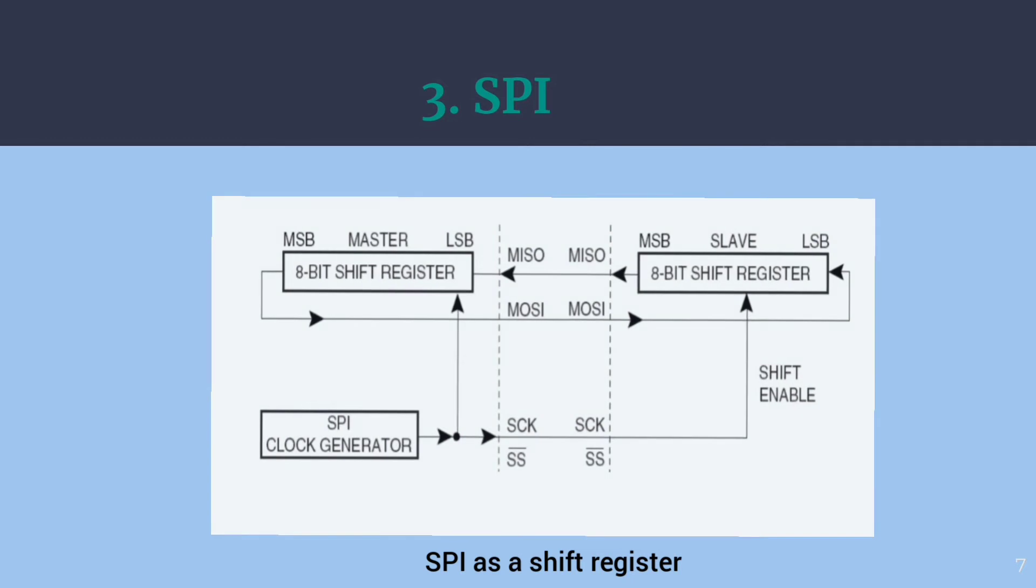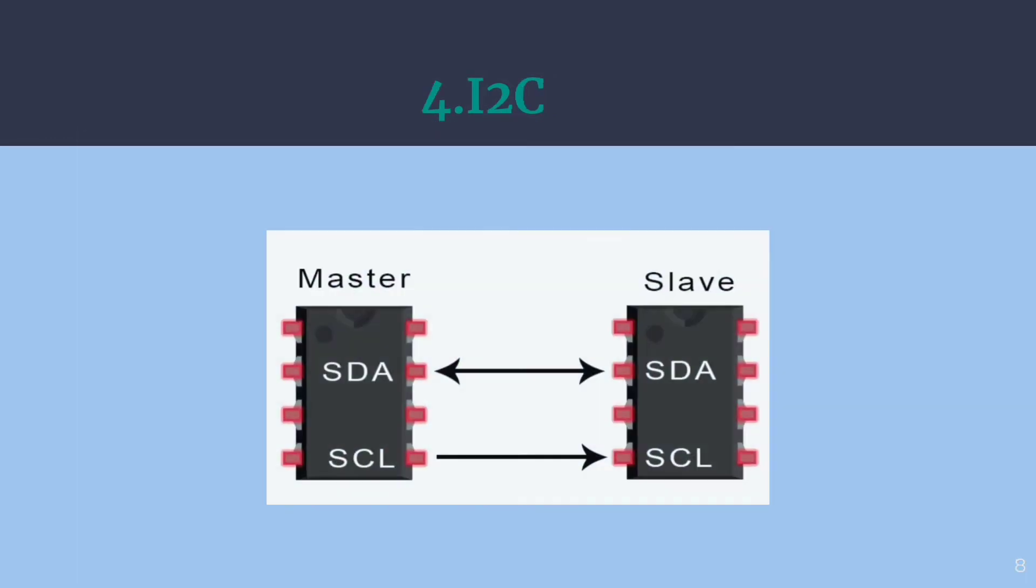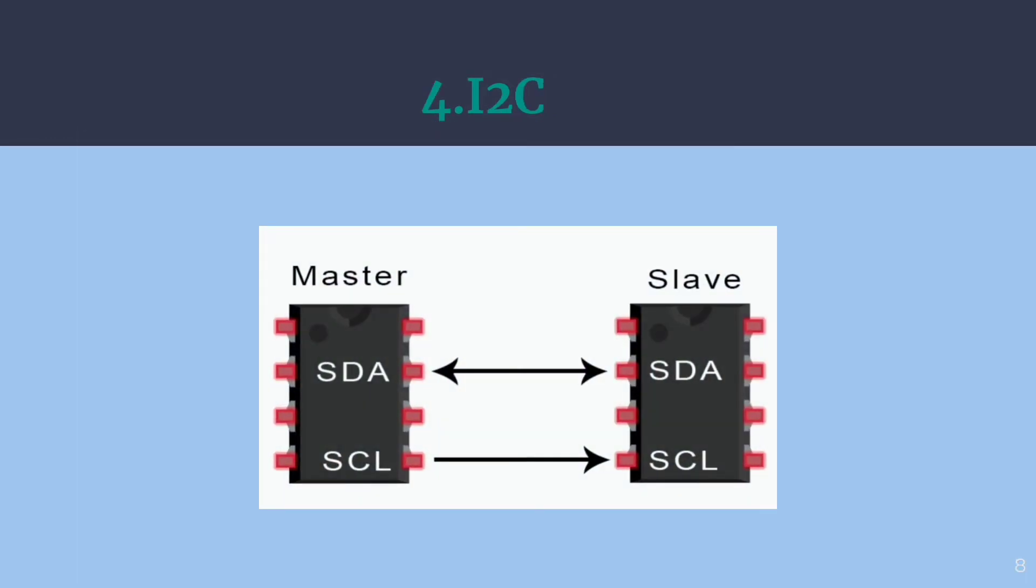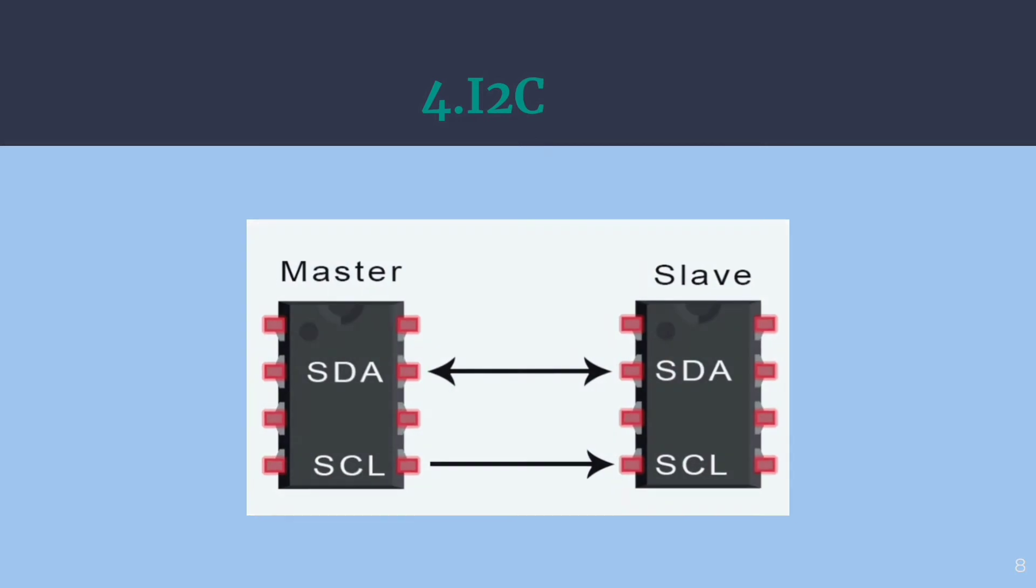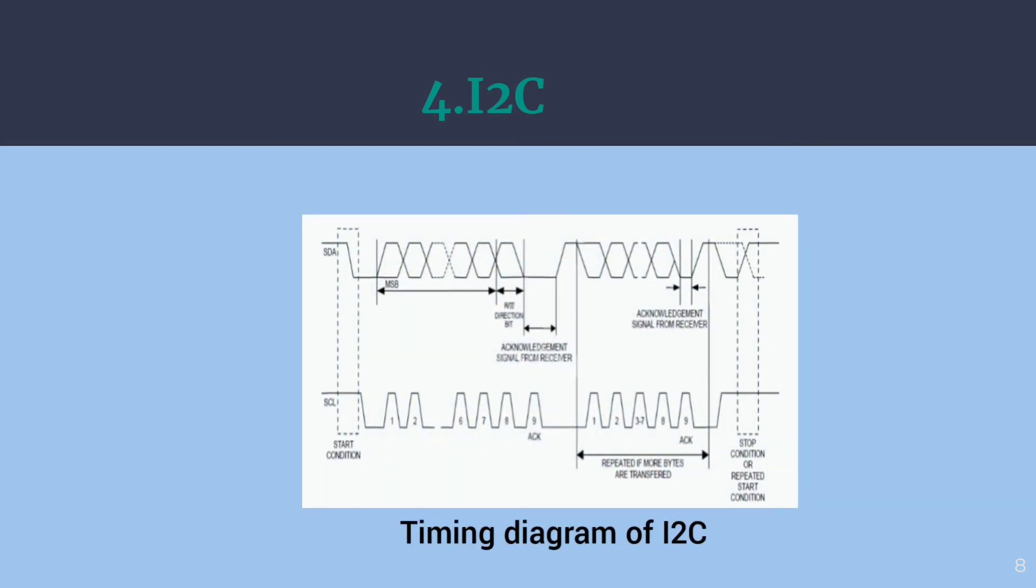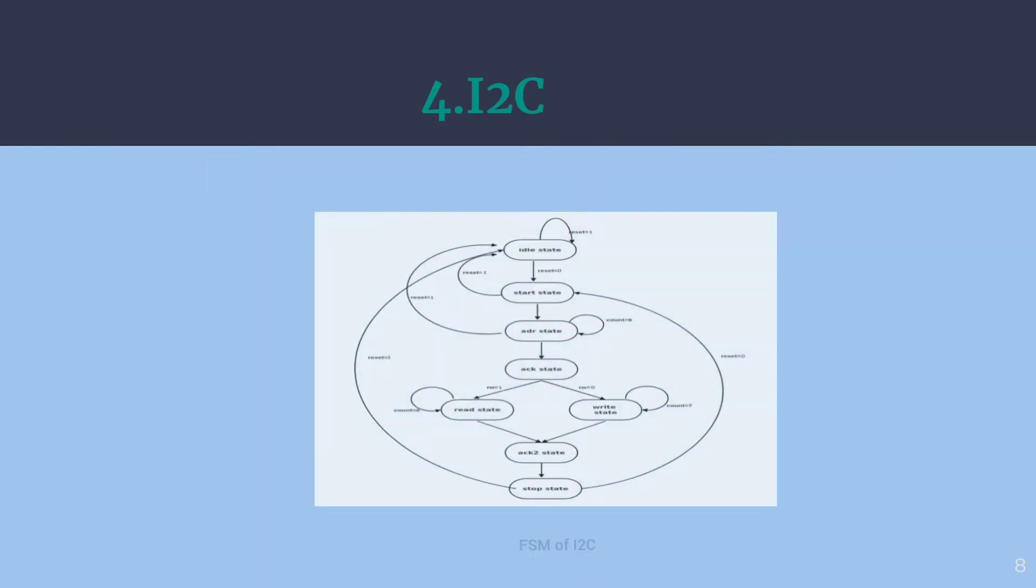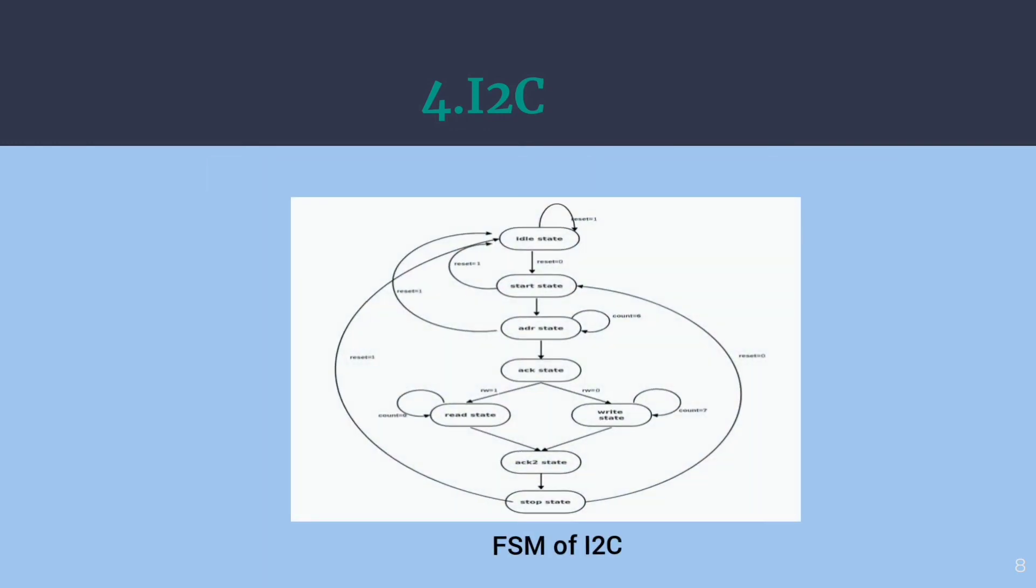Inter-integrated circuit, commonly known as I2C. I2C protocol is a way of serial communication between different devices to exchange their data with each other. Its data format consists of start bit, 7-bit slave address, read-write bit, acknowledgement bit, 8-bit data and a stop bit. It is designed using a finite state machine model.